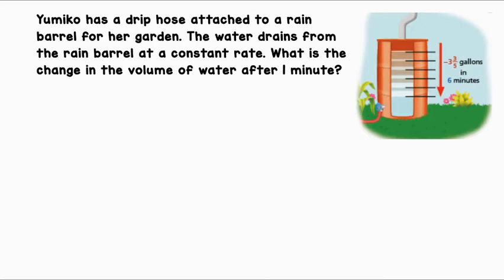Yumiko has a drip hose attached to a rain barrel for her garden. The water drains from the rain barrel at a constant rate. What is the change in the volume of water after one minute? It is shown to the right that the water drains at a constant rate of negative three and three-fifths gallons in six minutes.